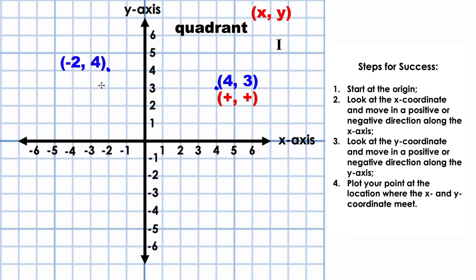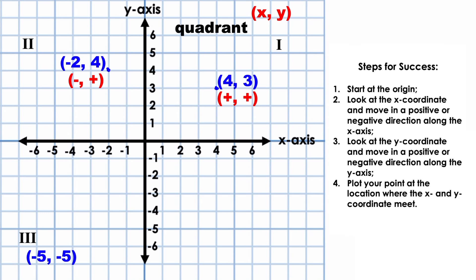This point is located in the second quadrant, again identified using Roman numerals. Every point located in quadrant II will have a negative x-coordinate and a positive y-coordinate. Take another moment to plot the point with coordinates negative 5, negative 5. Negative 5, negative 5 will be located in the third quadrant. Starting at the origin, we move negative 5 places along the x-axis and then negative 5 along the y-axis. So our point is right here: negative 5, negative 5. As you can see, every point in the third quadrant has both a negative x and y-coordinate.